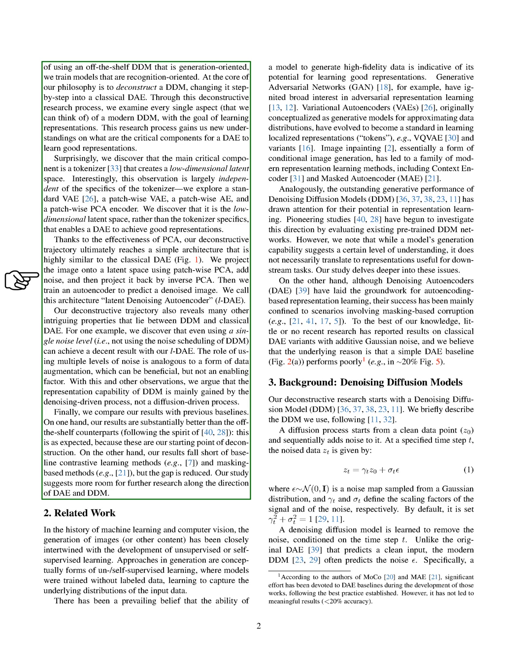Thanks to the effectiveness of PCA, our research ultimately leads us to a simple architecture that's very similar to the classical DAE. We project the image onto a latent space using patch-wise PCA, add noise, and then project it back by inverse PCA. Then we train an autoencoder to predict a denoised image. We call this architecture, latent denoising autoencoder, L-DAE. Our research also reveals many other interesting properties that lie between DDM and classical DAE.